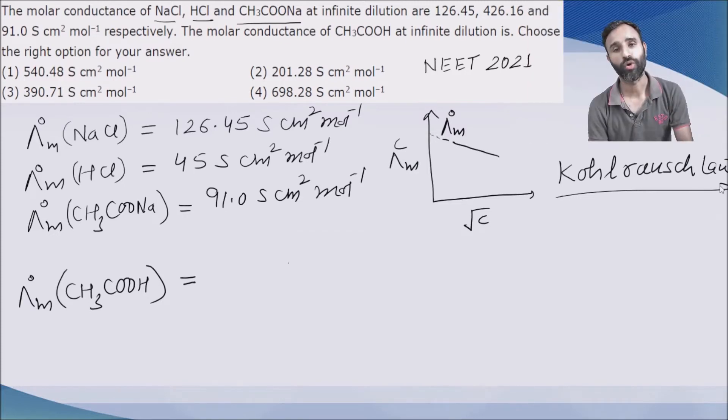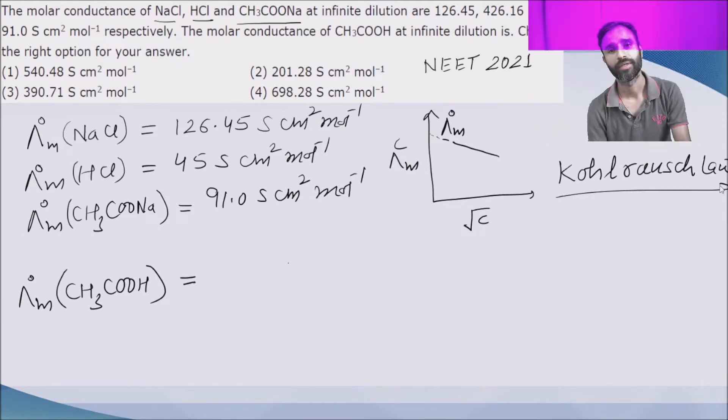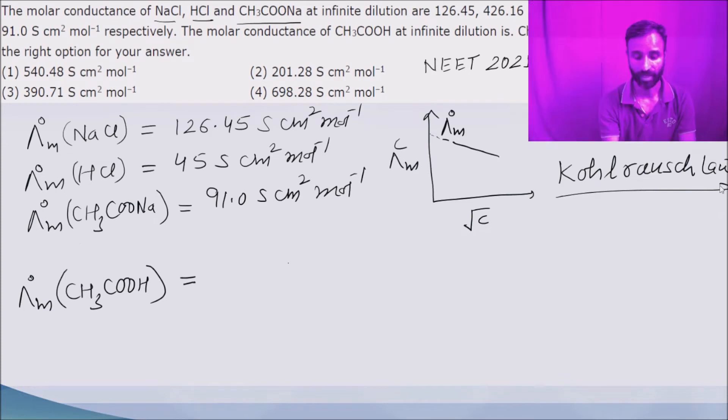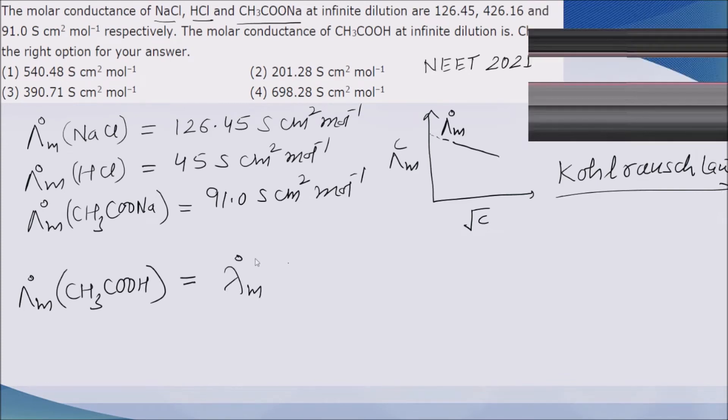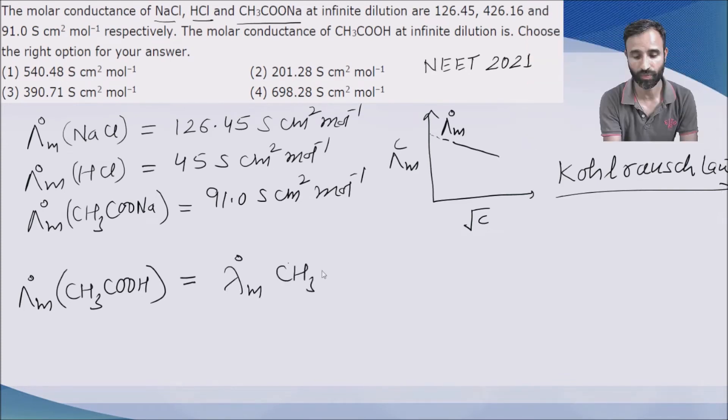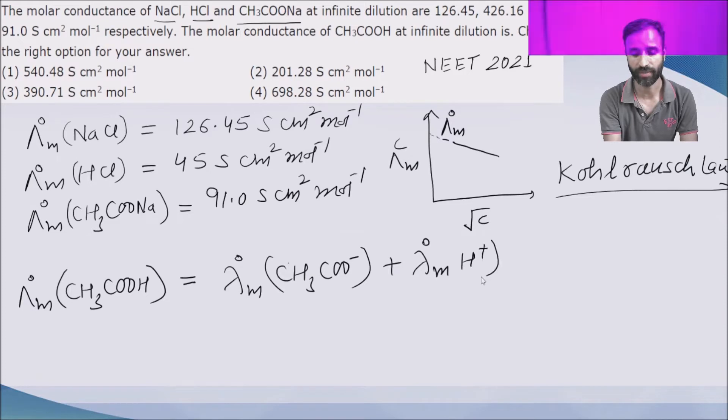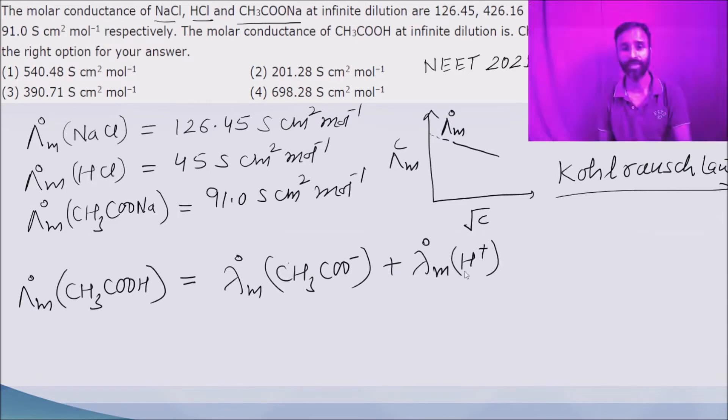According to Kohlrausch law, at infinite dilution, every ion has its own contribution towards molar conductivity, independent of the other ions with which it is present. Here we need lambda m0 of acetate ion and lambda m0 of H plus ion.